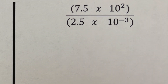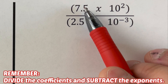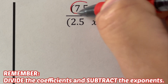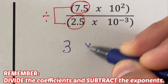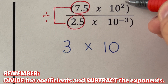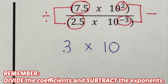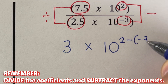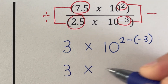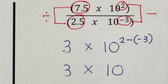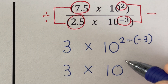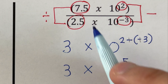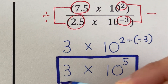For the last example, we divide the coefficients and subtract their exponents. So 7.5 divided by 2.5 is 3, times 10 to the power of 2 minus negative 3. To remember how to handle subtracting a negative, I use a 'boom boom' rule — subtracting a negative means we add, so 2 minus negative 3 equals 5. The final answer is 3 times 10 to the power of 5.